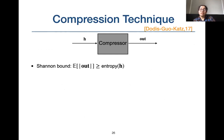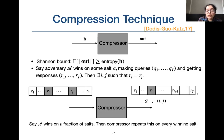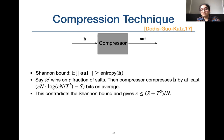Next, we tried using the compression technique Dodis et al. used for bounding advantage of one-block-long collision finding adversaries. Based on the Shannon bound, the expected output size of a compressor should be at least as long as the entropy of h. Dodis et al. gave a compressor that compresses h using an adversary finding collisions on some salt using s-bit advice. For the winning salt, the compressor stores the salt and two log-n-bit pointers to entries with the same output, deletes the second entry to save log-n bits, and stores the s-bit advice. For an adversary winning on an ε fraction of salts, this contradicts the Shannon bound, giving their bound of (s + t²)/n.